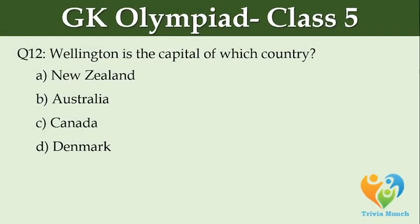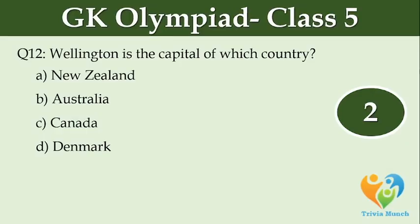Wellington is the capital of which country? Option A: New Zealand. Option B: Australia. Option C: Canada. Option D: Denmark.